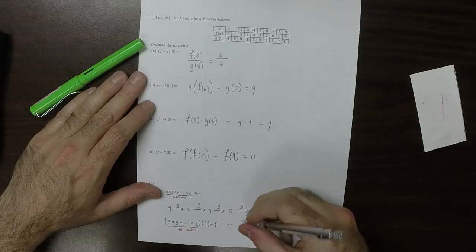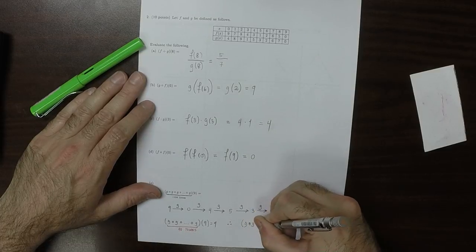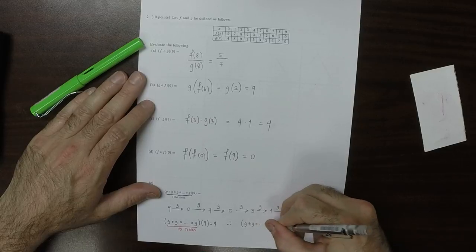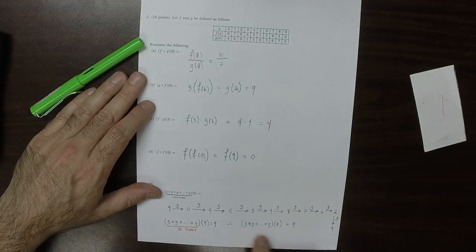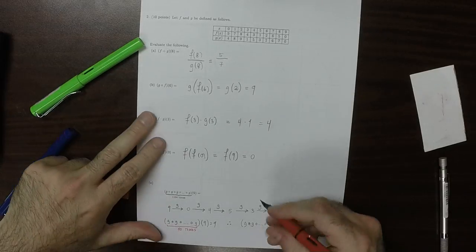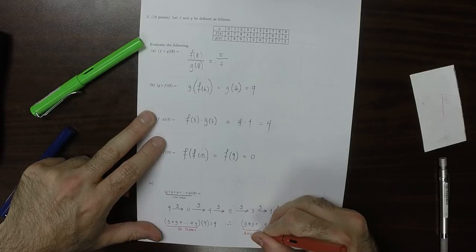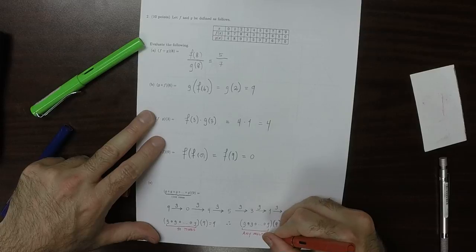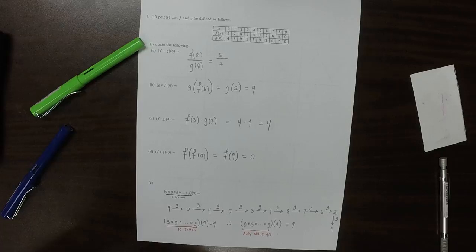Therefore, we could do G circ G circ dot dot dot circ G of 9, and we'll get 9 as long as the number of times that we do it is a multiple of 10. Any multiple of 10. Well, 1100 is a multiple of 10. So we can go all the way to 1100, and we'll get back to a 9.